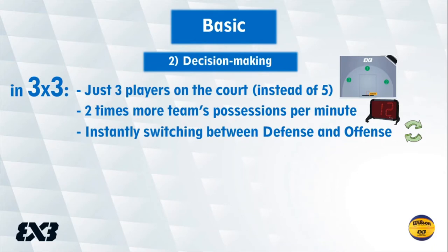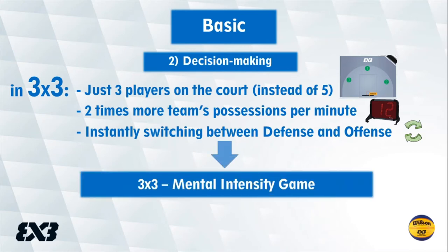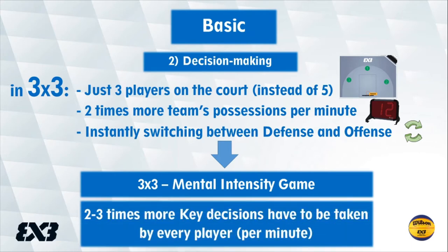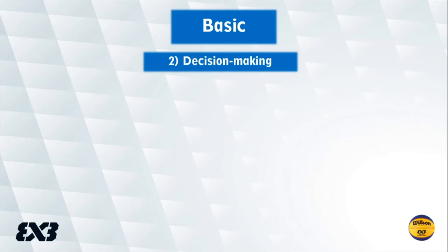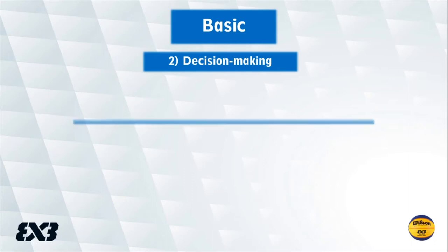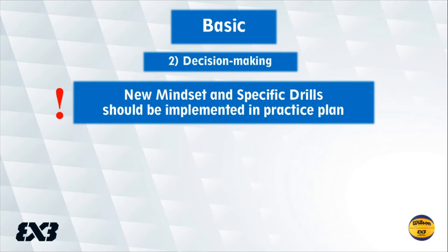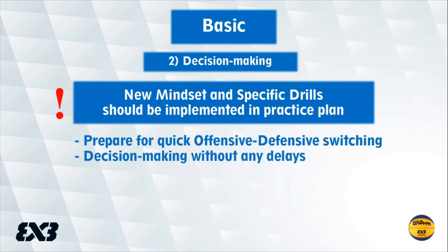In 3-on-3 basketball there are three important issues: just three players on the half court so each player has more intensity every minute; two times more possessions per minute due to the 12-second shot clock; and instant, continuous switching between defense and offense. That's why 3-on-3 is a high mental intensity game — every player has to make two or even three times more key decisions every minute, continuously without stopping.